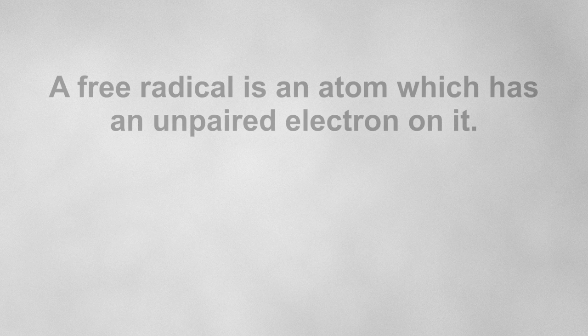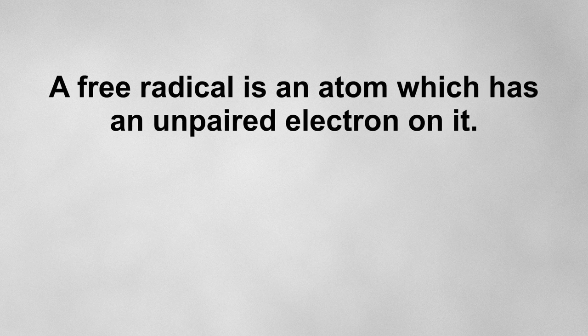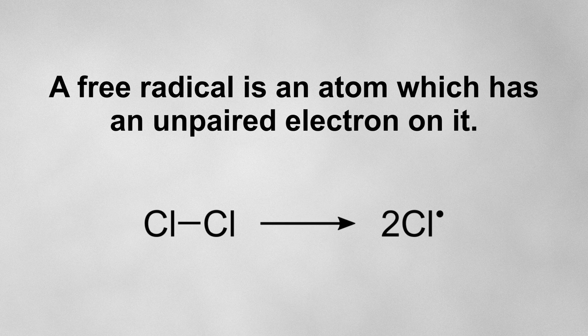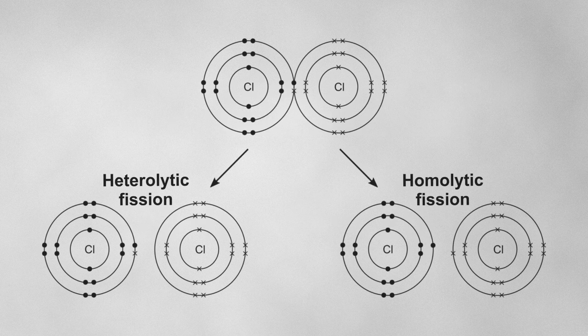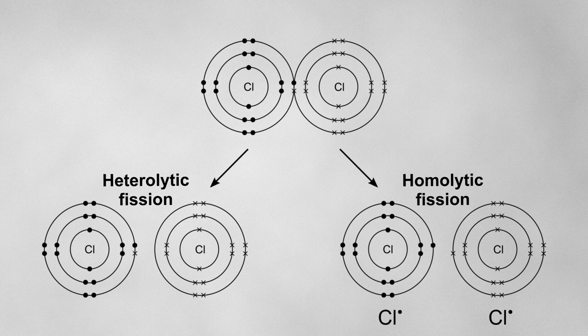Remember, a free radical is an atom which has an unpaired electron on it. Halogen free radicals can form when the covalent bond between the atoms absorbs an ultraviolet photon. This causes homolytic fission to occur, forming two neutral free radicals.